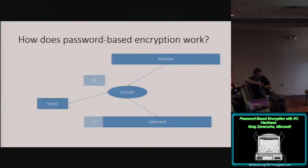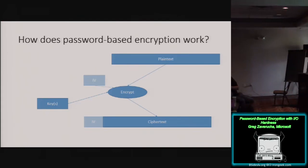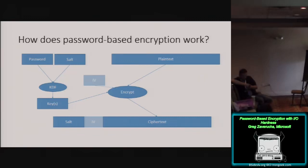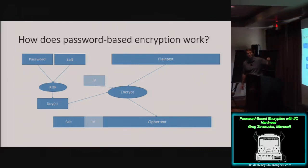I'll start with a picture of normal encryption where there's a plaintext at the top. We have an IV — that's a random value which changes for each encryption operation. Those two, together with keys, are inputs to the Encrypt function, which outputs the ciphertext and the IV. With a password, a password and a salt go through a function called a key derivation function, and that's where you get your keys. Everything else is the same.